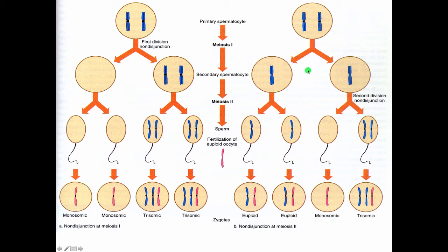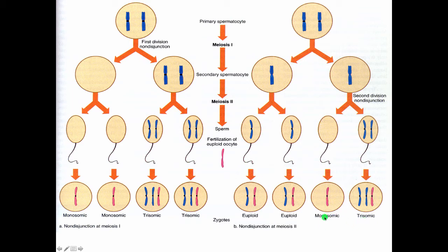On the other hand, if nondisjunction occurs at meiosis 2, looking at the percentage of conceptuses: 50% would be normal ploidy, 25% would be trisomic, and 25% would be monosomic. We're looking at the percentage of conceptuses that are normal, not the percentage of live births. With meiosis 2 nondisjunction, monosomic conceptuses don't reach term, so two-thirds of live births would be normal and one-third would be trisomic.